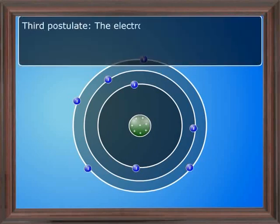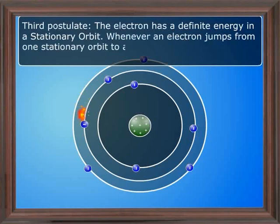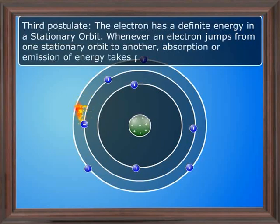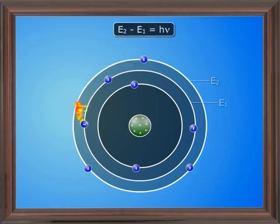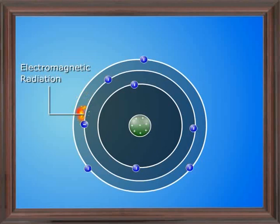Third postulate. The electron has a definite energy in a stationary orbit. Whenever an electron jumps from one stationary orbit to another, absorption or emission of energy takes place. The absorption or emission of energy is equal to the difference in the energy of the two stationary orbits involved. The energy will be in the form of electromagnetic radiations.